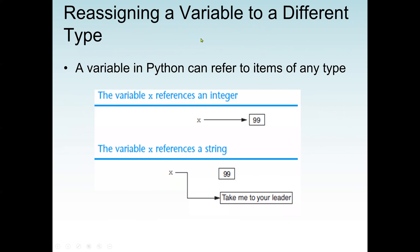A variable in Python can refer to items of any type, and a variable assigned to one type can be reassigned to another. For example, 'x = 99' (integer) can then be reassigned to 'x = "Take me to your leader"' (string).